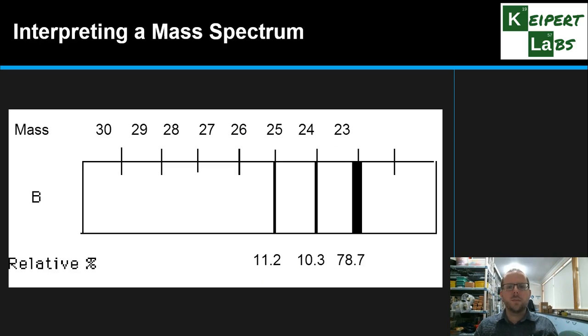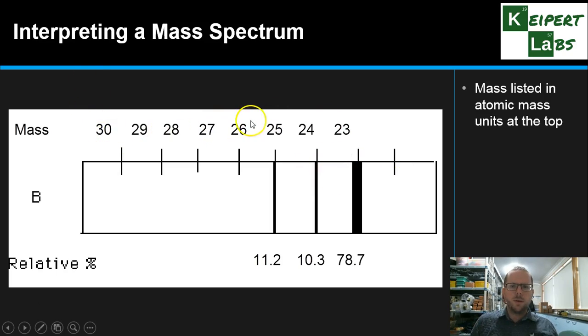And so what we get is a mass spectrum that looks a bit like this at the other end. So what we have is that the relative atomic mass listed in atomic mass units is shown here at the top of the diagram. So corresponding to, these are offset a little bit. This should be 23, 24, 25, and so on. That's just from the diagram. My apologies there.